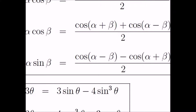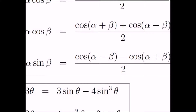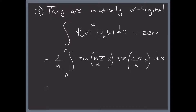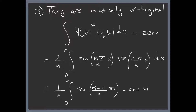We're going to use a trig identity — the difference of cosines. So we have: 1/a times the integral from zero to a of cosine of (m minus n) divided by a times pi x, minus cosine of (m plus n) divided by a times pi x, dx. We use this trig identity.